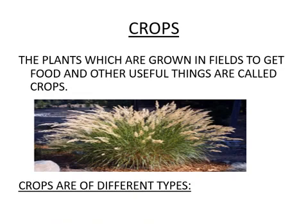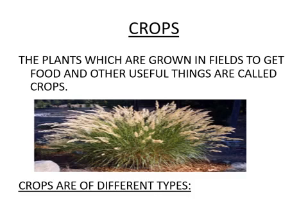Our next topic is crops. The plants which are grown in fields to get food and other useful things are called crops. Whatever farmers grow in fields to get something useful — any vegetables, fruits, grains, pulses, or cotton — is called a crop. Crops are of different types and we are going to read three types of crops.